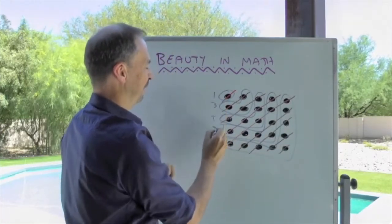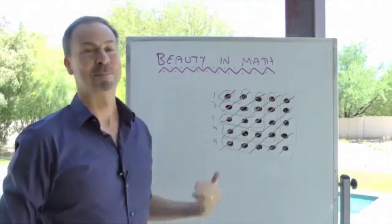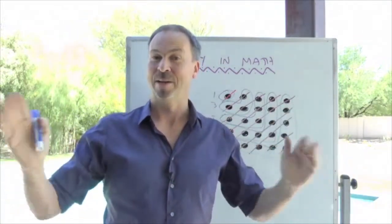That is one, three, five, seven, nine. That's the first five odd numbers. So what's the sum of the first five odd numbers? It must be all the dots in the array, five squared, 25.